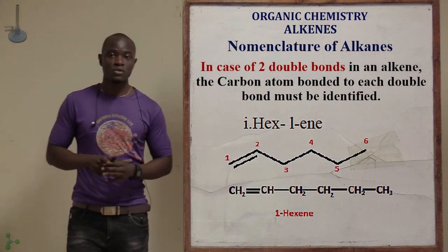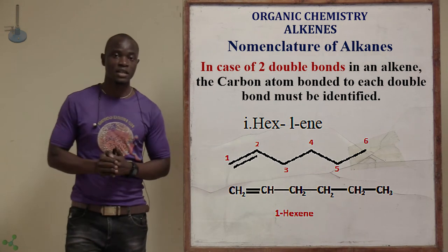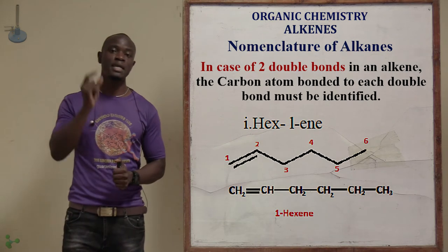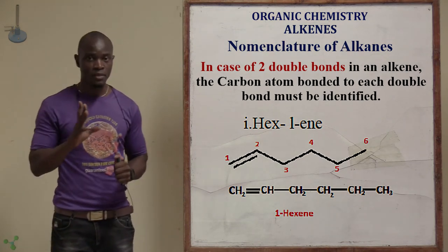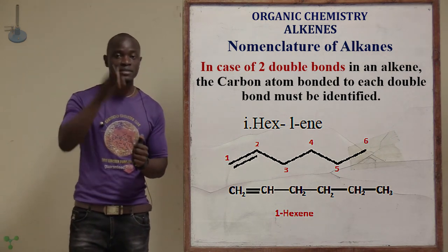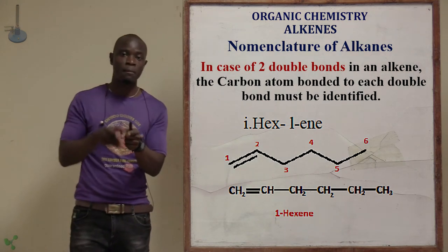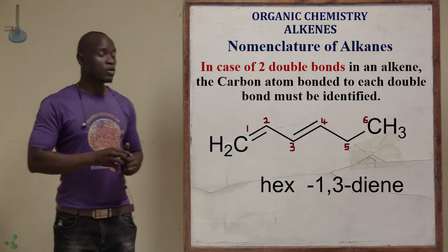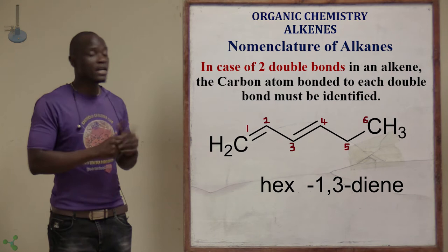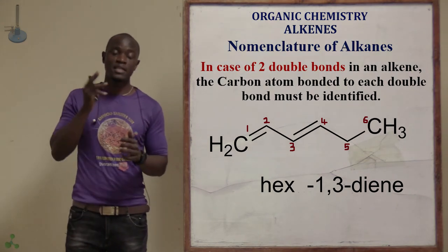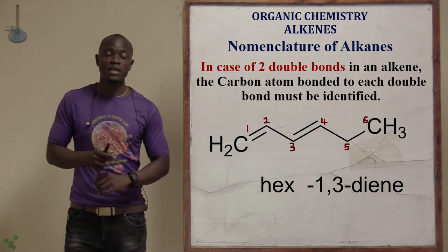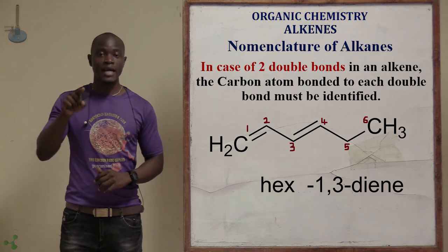For example, a hex-1-ene structure means the double bond appears immediately after carbon number 1. If we have two double bonds — say after carbon 1 and after carbon 3 — we must identify both positions. This structure would be called hex-1,3-diene.